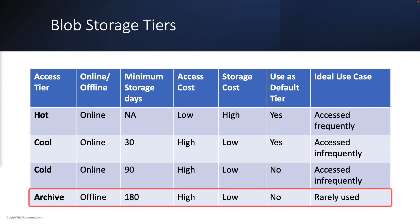The fourth and final tier is the archive access tier. This tier is designed for storing rarely accessed data offline and has a minimum storage period of 180 days. It offers the lowest storage cost but the highest access cost, making it a great option if you are storing large quantities of data for long periods. It is an offline tier and hence can take hours to restore the data.